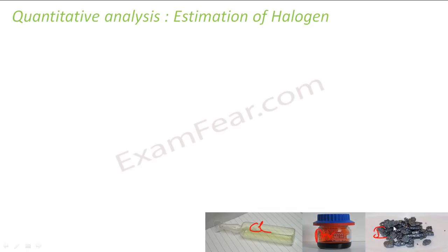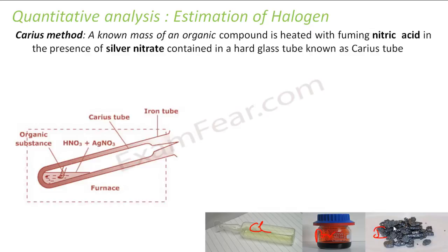I want to estimate the halogen. So in this case we use the Carius method. A known mass of organic compound is heated with nitric acid in the presence of silver nitrate.